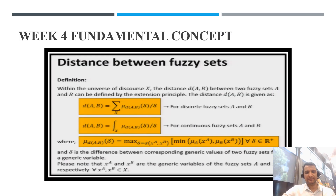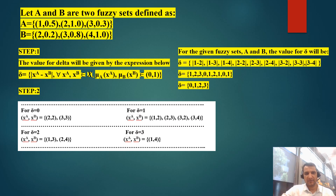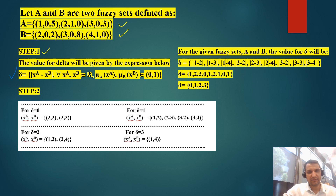For week 4, the fundamental concept — which is very important — is finding the distance between two fuzzy sets. The distance d between fuzzy sets A and B uses a formula where we first take the minimum value and then the maximum value. In step one, we calculate delta, where delta equals x_A minus x_B for all x_A and x_B belonging to the universe of discourse.